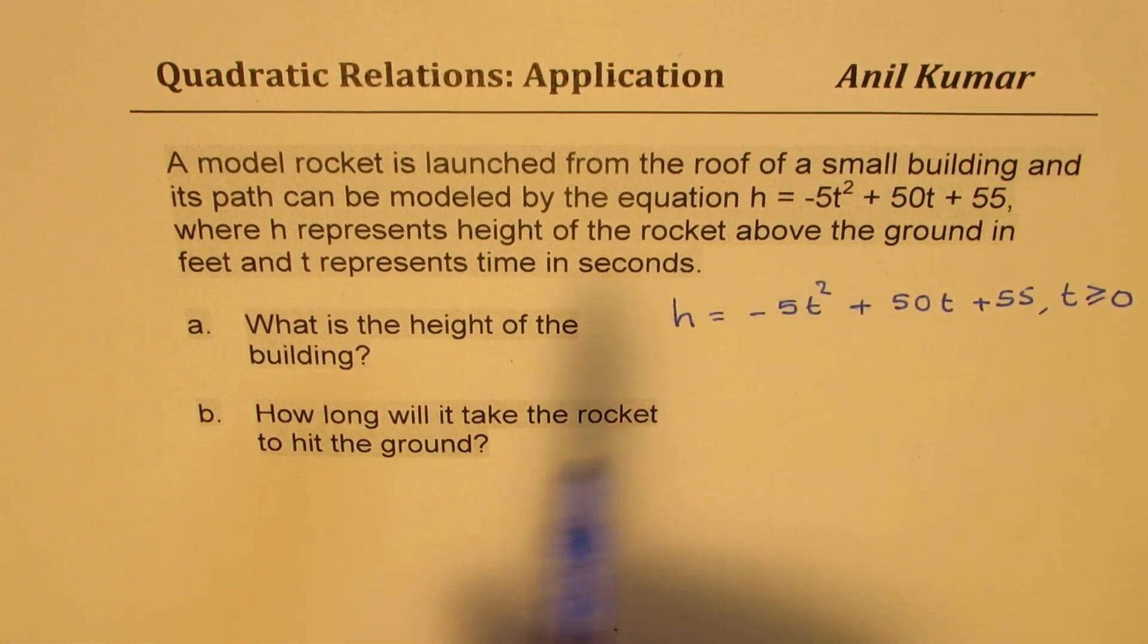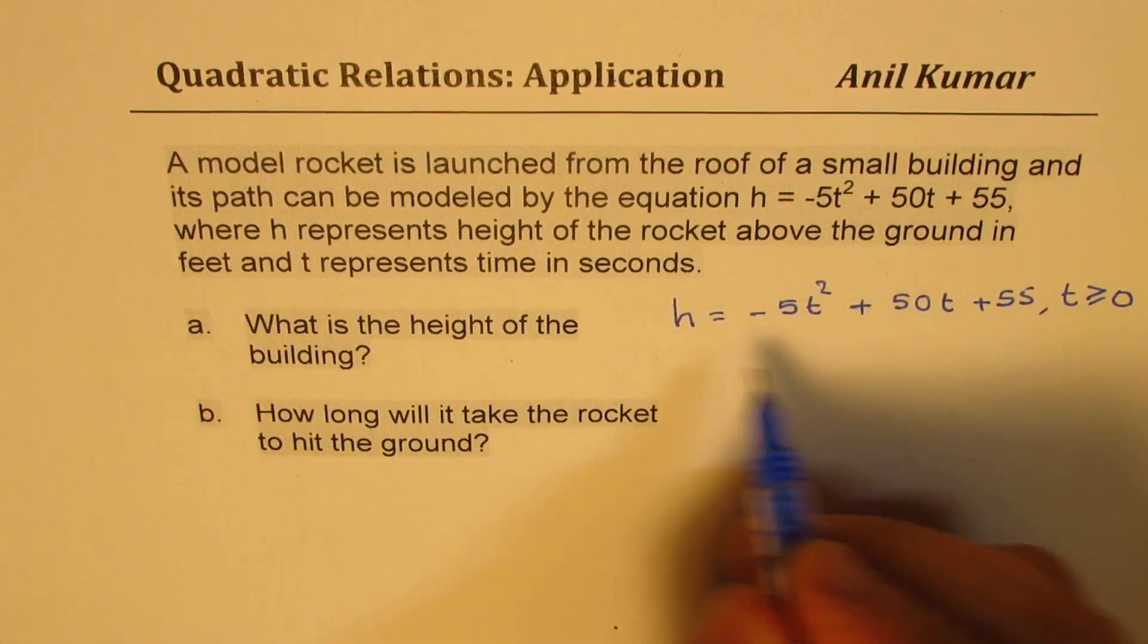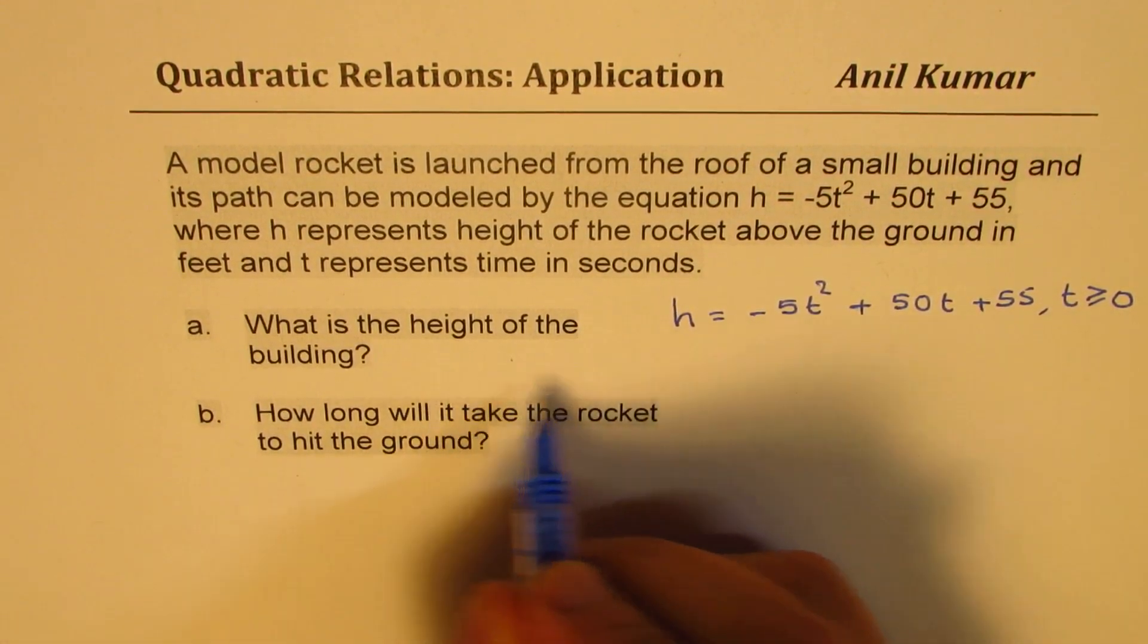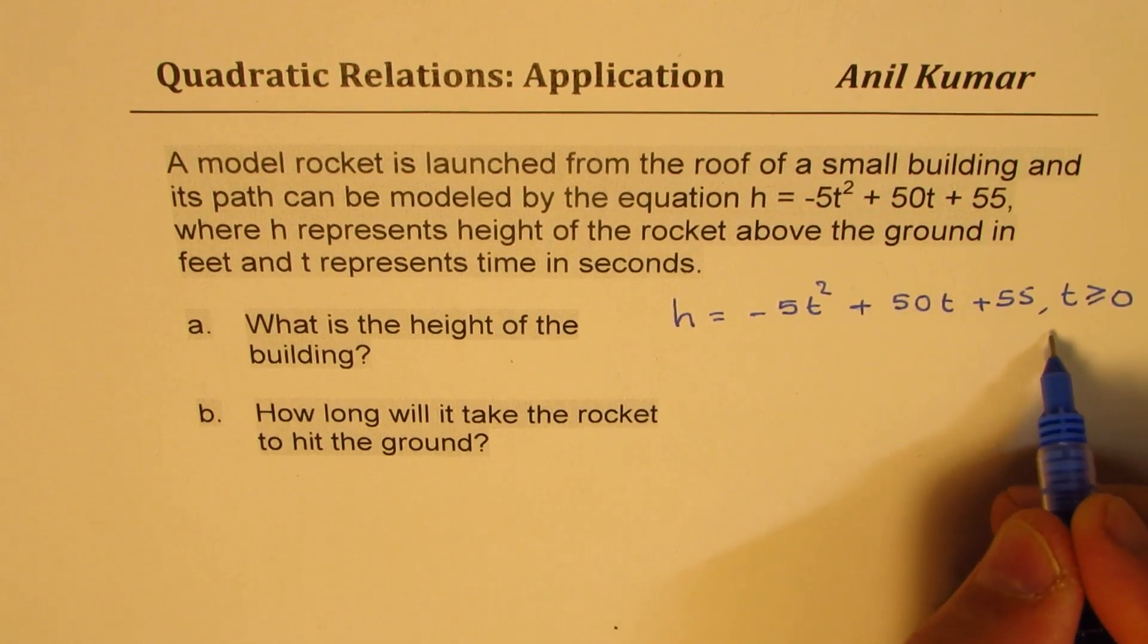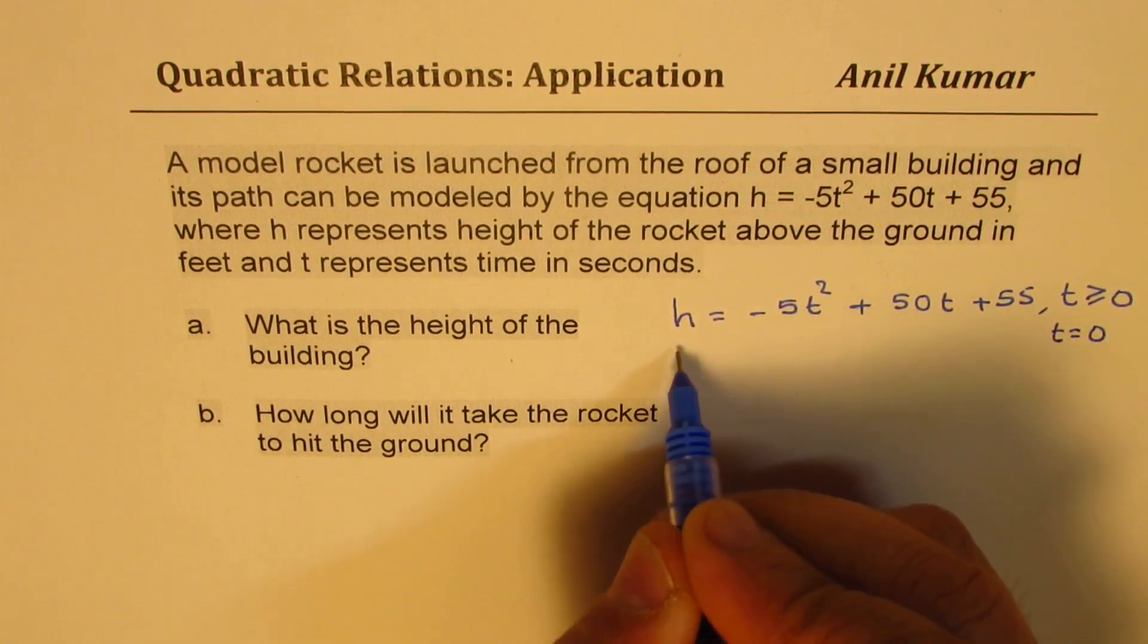When we are looking for what is the height of the building, that really means that at that time when it is being launched, T equals 0. So that is what you need.